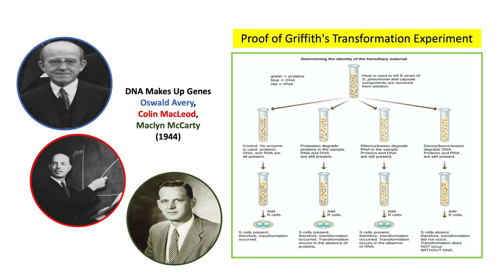Using the extract from the heat-killed S-strain from Griffith's experiment, they used proteases, ribonucleases, and deoxyribonucleases to degrade proteins, RNA, and DNA respectively.